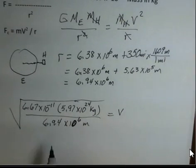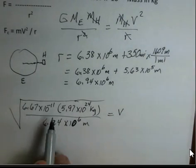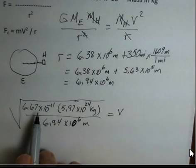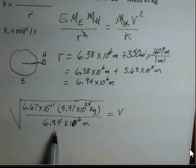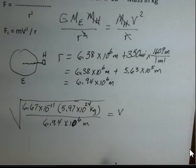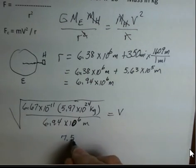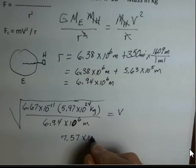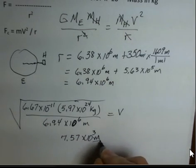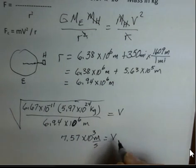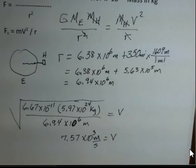So you should pause the video and plug these numbers into your calculator. Multiply the top, divide by the number on the bottom, then take a square root of that result. And welcome back. Hopefully you did pause and calculate. So I get 7.57 times 10 to the 3rd meters per second is the value for V.